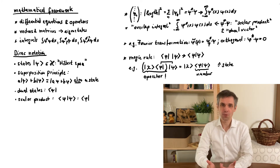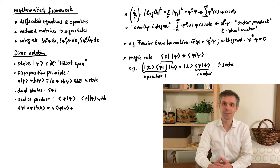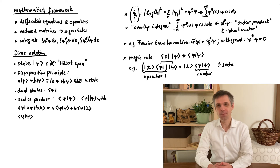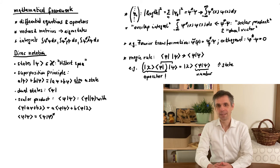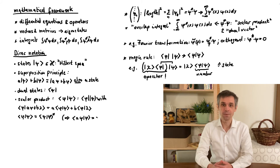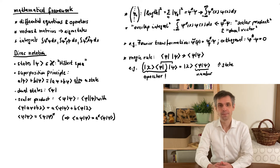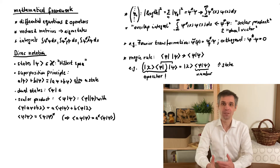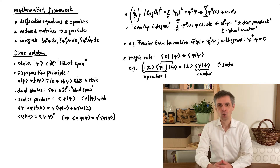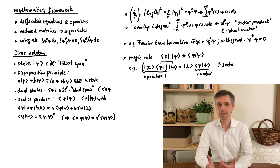The scalar product always fulfills a few rules that help us in our calculations. When you take the scalar product with a superposition, you can simply multiply all terms out in the most natural way. Furthermore, when you interchange the two entries in the product, you just end up with a complex conjugation — you can immediately check this with the overlap integral. When we combine these two rules, we see that when we have a superposition in the first entry, we can also multiply all terms out, but we have to be careful with the numbers because they appear with a complex conjugation.